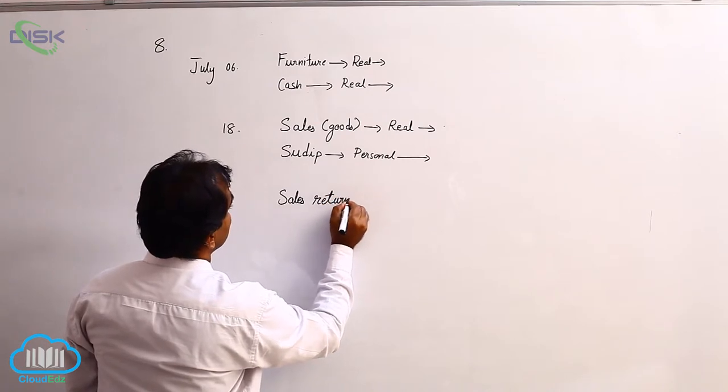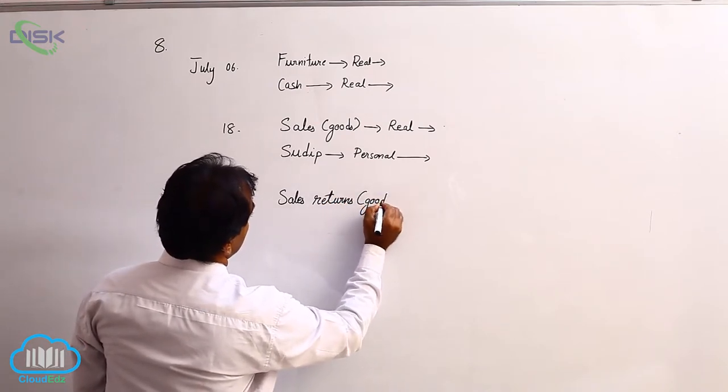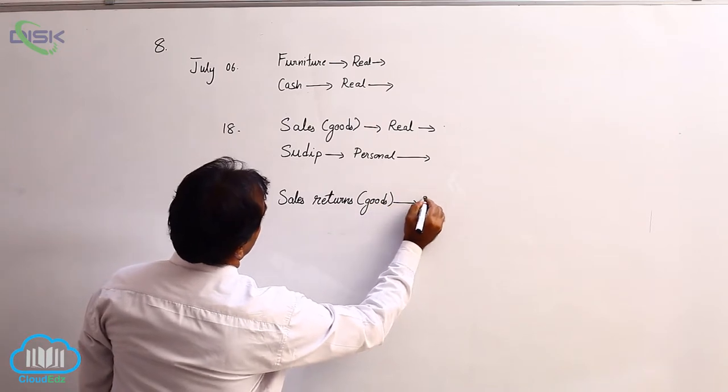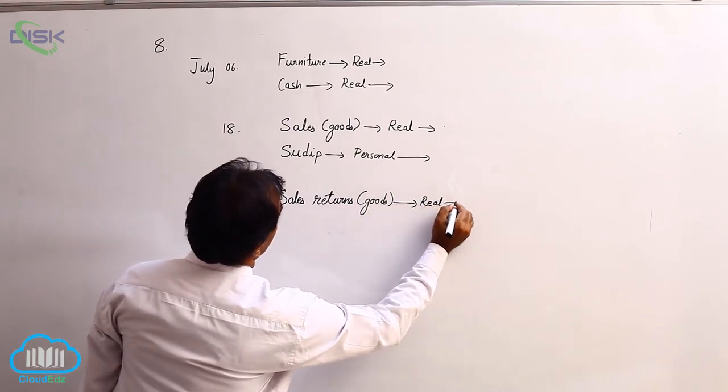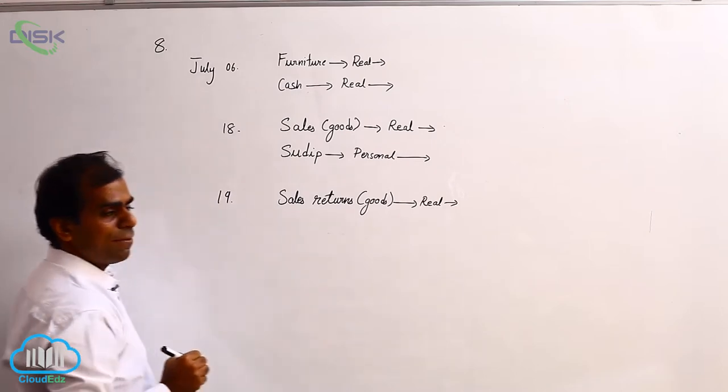We will treat it as sales returns. So these are nothing but goods. As you know, goods are real account and we are getting them back. Apply the rule, thinking carefully.